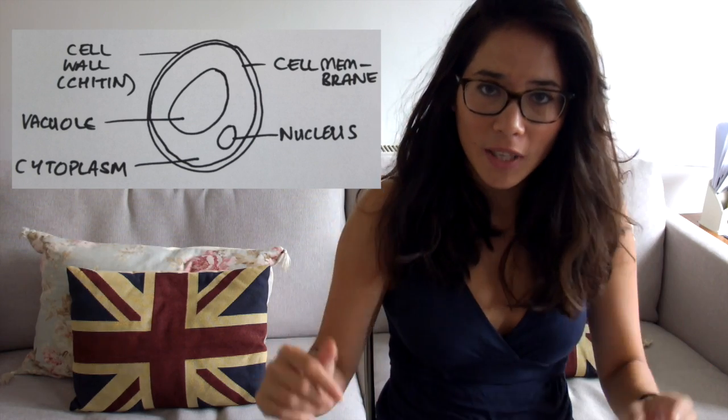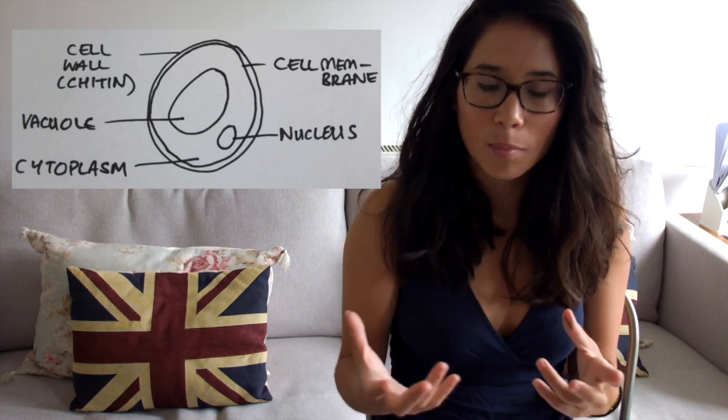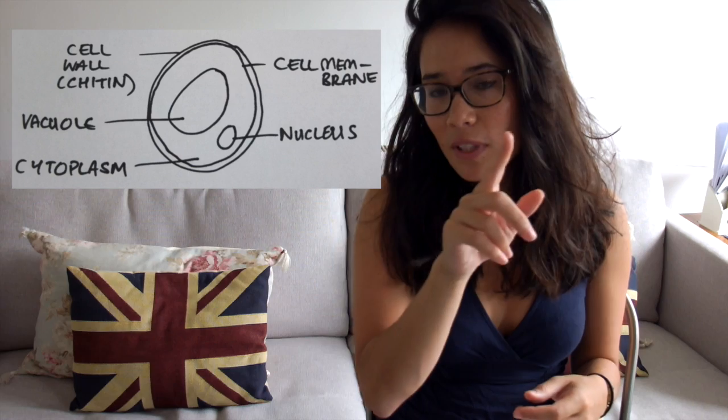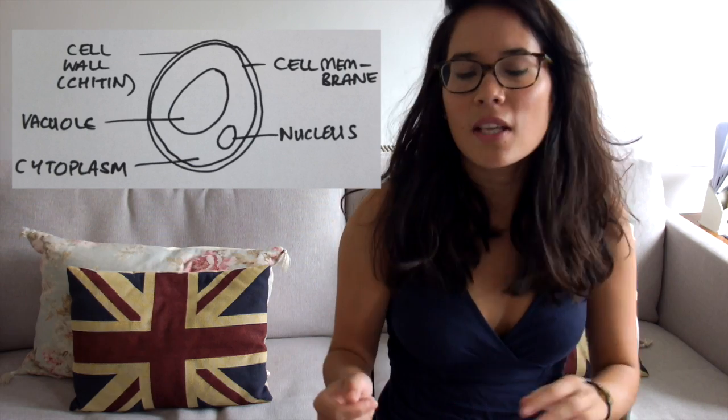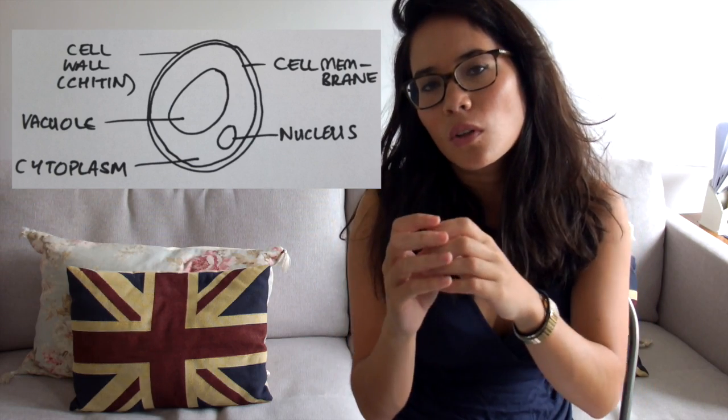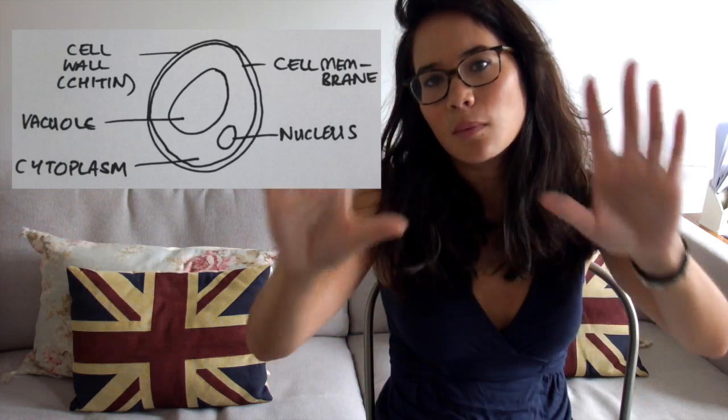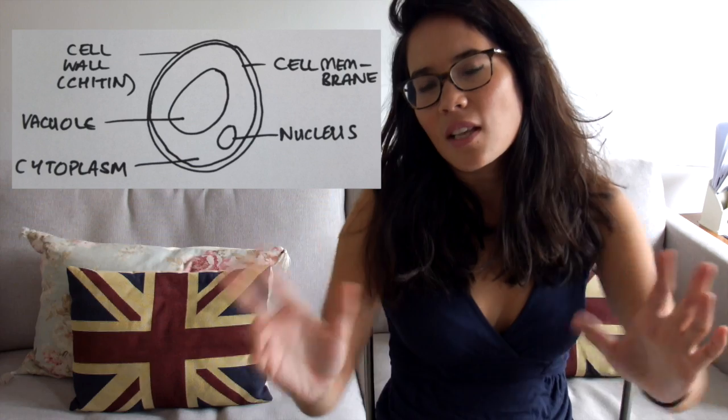fungi cell walls are made out of chitin. Then you're going to have a cell membrane, again like a plant cell, with a vacuole in the middle, a nucleus also found in one corner, and cytoplasm. Remember, fungi structure is very similar to a plant cell, so if you're struggling in the exam and can't really remember, try and use your plant cell as your guide — just remember don't include any chloroplasts because that won't get you any marks.